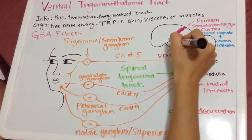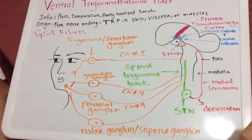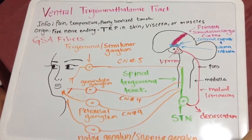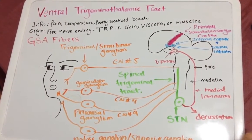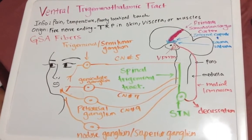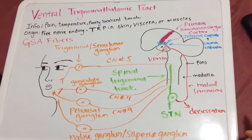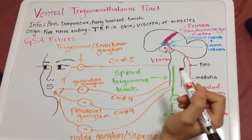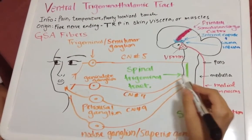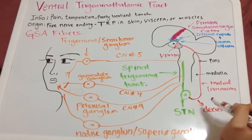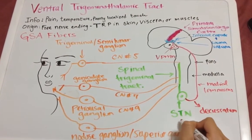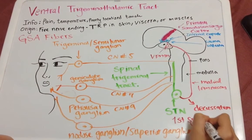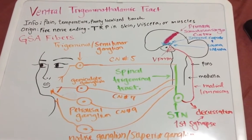Then the information from the VPM goes up via the projecting fibers, internal capsule, and corona radiata, to reach the primary somatosensory cortex. These fibers are all GSA fibers that take pain, temperature, and poorly localized touch — specifically from the external ear. They go through the spinal trigeminal tract, and the first synapse is at the spinal trigeminal nucleus.